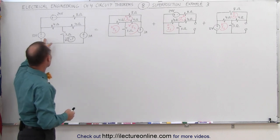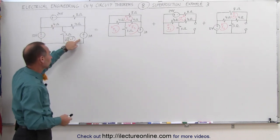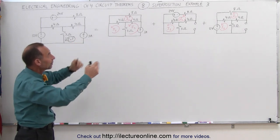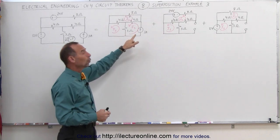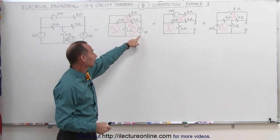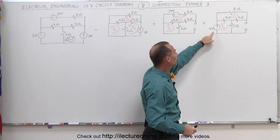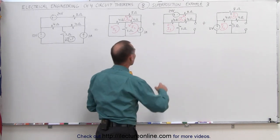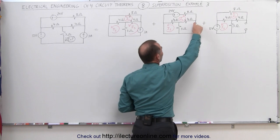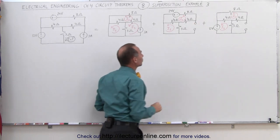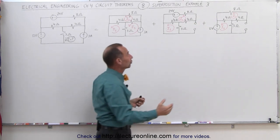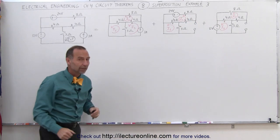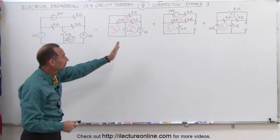Here we have a circuit that has three sources: two voltage sources and a current source. What we're doing here is separating that into three separate circuits, each only carrying one of these sources. Here we have the current source, here we have one of the voltage sources, there we have the other voltage source and the other sources are not present. Notice that when we remove the current source, we open the circuit at that location. When we remove a voltage source, we simply have a short in the place of the voltage source.